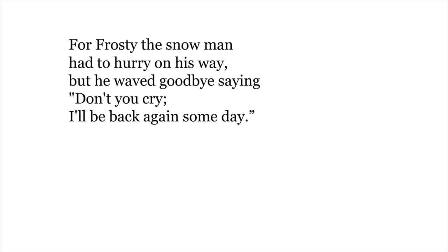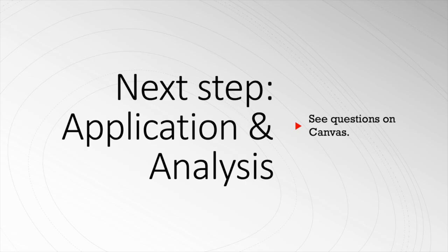"For Frosty the snowman had to hurry on his way, but he waved goodbye saying, don't you cry, I'll be back again someday." This ending provides the story with balance through counterpointing. Earlier we saw Frosty's connection with the kids; here we see their disconnection. This was a stranger comes to town story — in the first part, the stranger sailed into town; at the end, he's sailing right back out. Sailing out to his death from melting, which he prophesied earlier. Because that prophecy is coming true, we believe the prophecy about his resurrection. This kind of parallel structure in stories is sometimes called rhyming action. You had no idea that Frosty the Snowman was so complex and dark, did you?